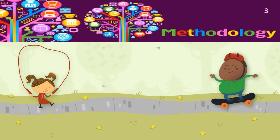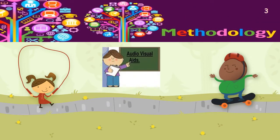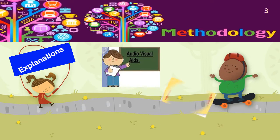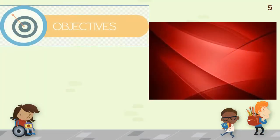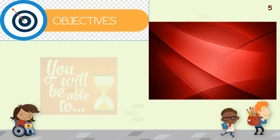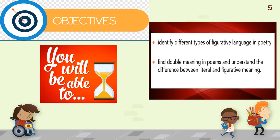In methodology, we're going to have audio-visual aids, explanations, and assignments. In resources, we're going to use the Junior English book and the internet as our outside source. In objectives, you will be able to identify different types of figurative language in poetry, find double meaning in poems, and understand the difference between literal and figurative meaning.